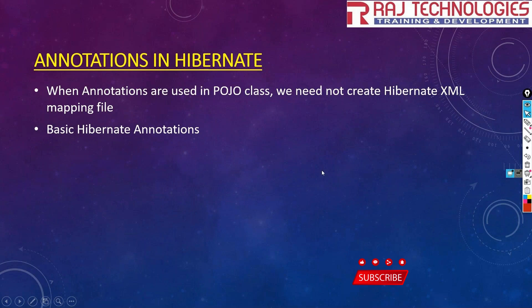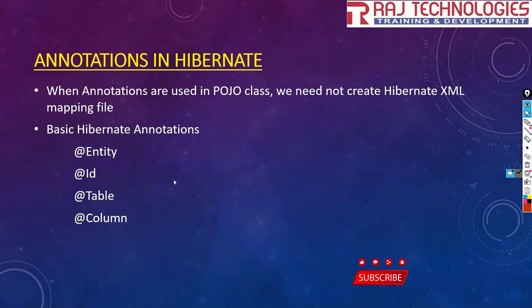We will discuss some basic annotations in this video: @Entity, @Id, @Table, and @Column. The @Entity annotation is used to map your POJO class with the database table. @Id is used to generate the primary key — it marks a property of the POJO class as the primary key.